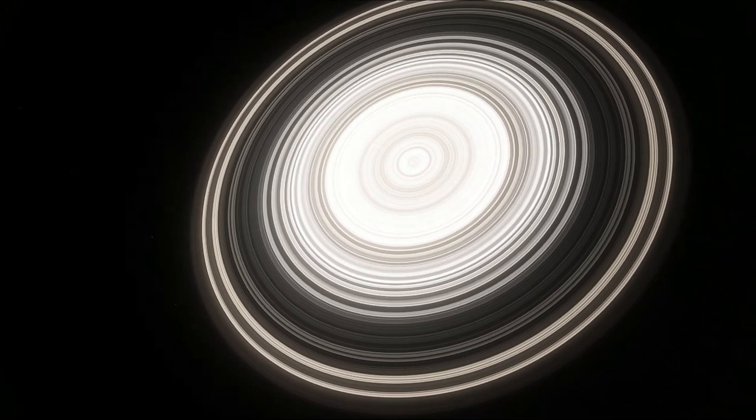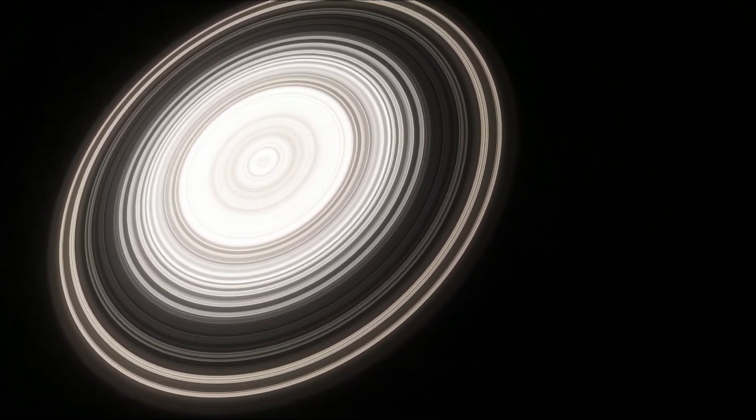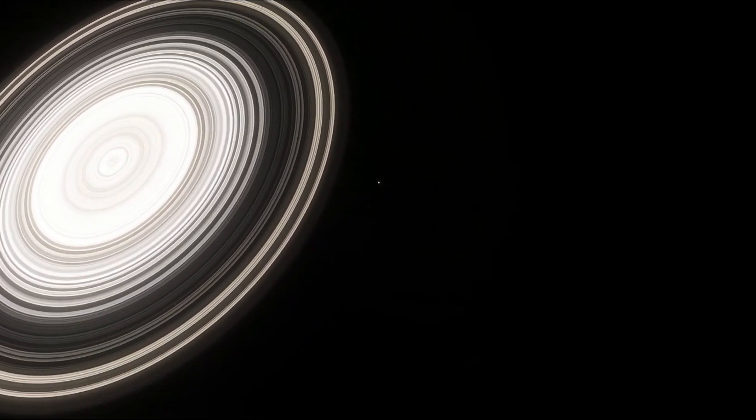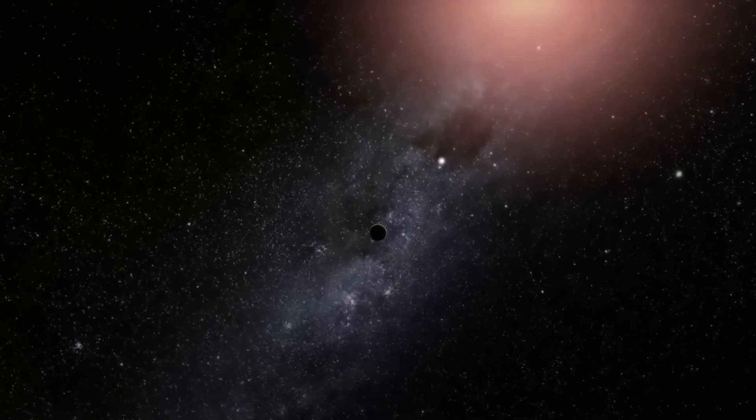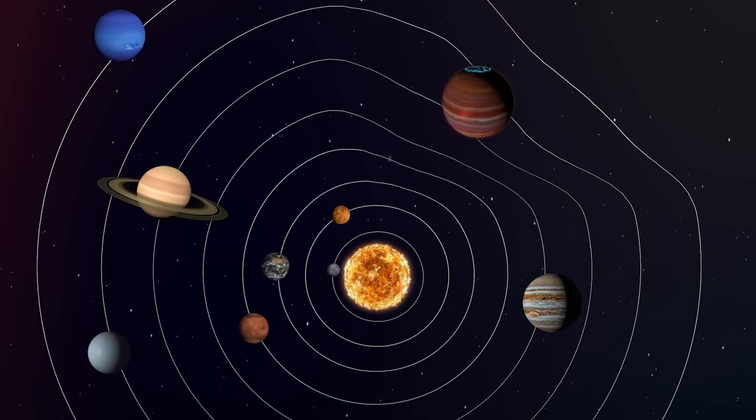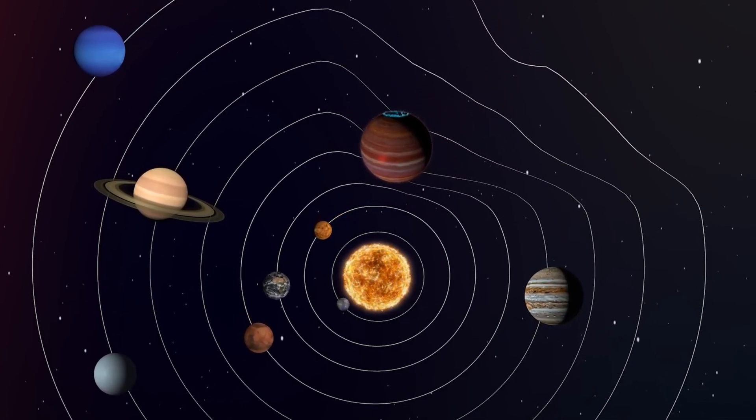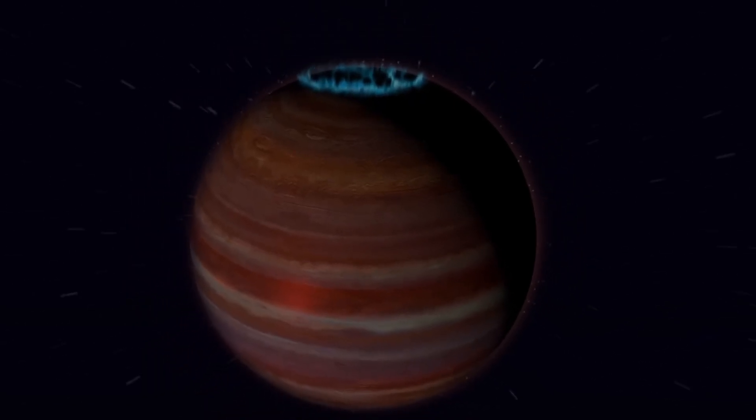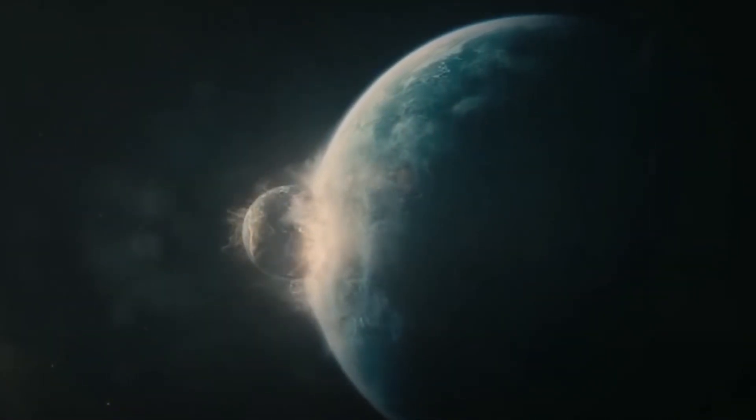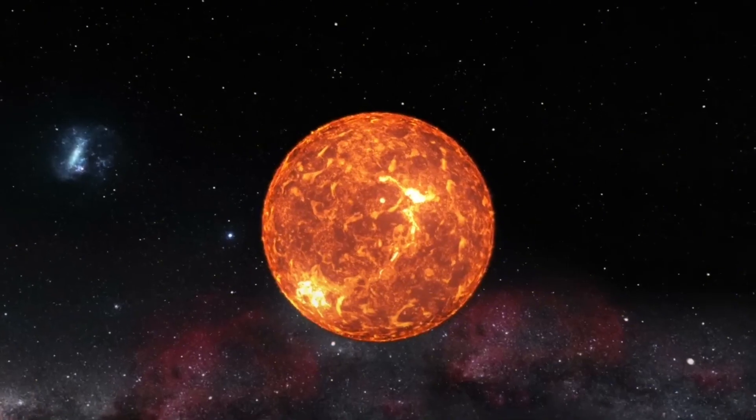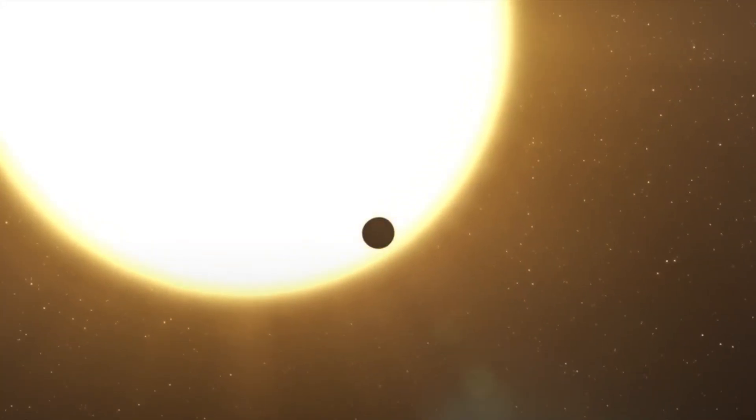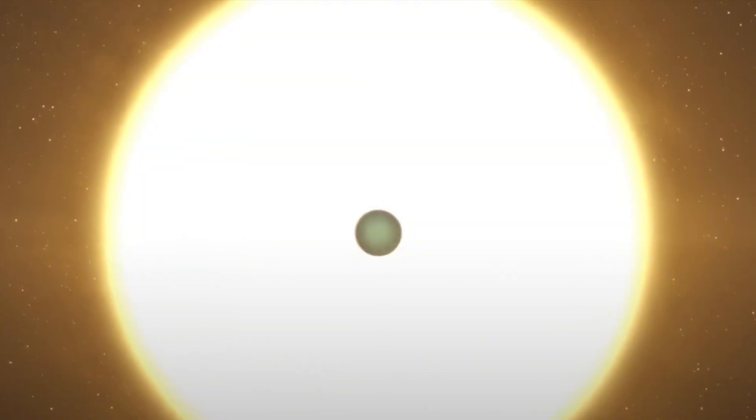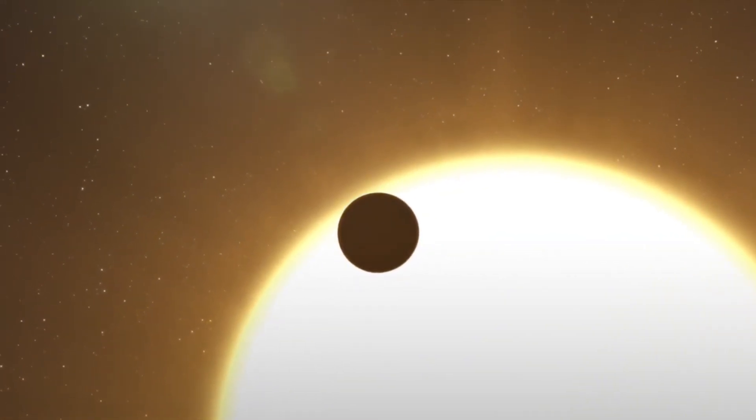If a rogue planet were to enter our solar system, it wouldn't just be a friendly neighbour dropping by for tea. Its massive gravitational pull could disrupt the orbits of other planets, causing chaos on an unimaginable scale. Earth could be knocked out of its stable orbit, sending us spiralling closer to the sun to bake like a cookie, or flung out into deep space to freeze into a lifeless ice ball.